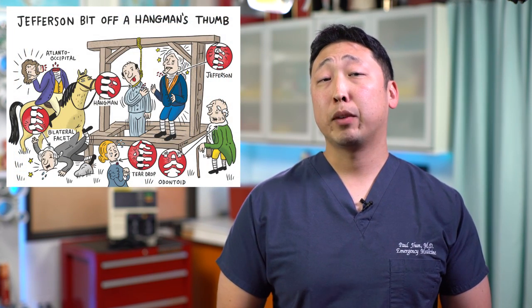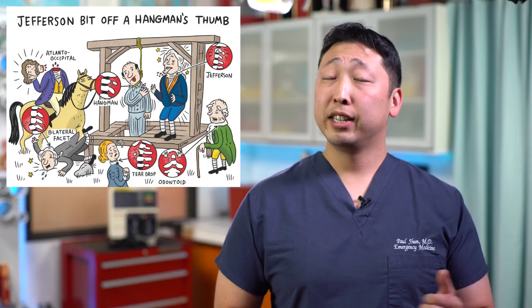Hi, I'm Paul Jun, and for today's Hippo Show, we're going to cover a visual mnemonic going over the unstable cervical spine fractures. Jefferson bit off a hangman's thumb.